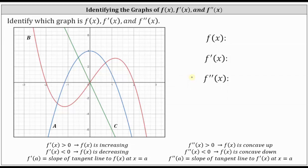We need to identify the graph of f of x, f prime of x or the first derivative, and f double prime of x or the second derivative. Remember, the sign of the first derivative indicates whether the function f of x is increasing or decreasing, and the sign of the second derivative indicates whether f of x is concave up or concave down.